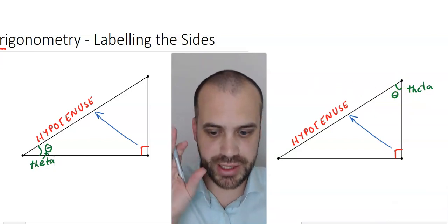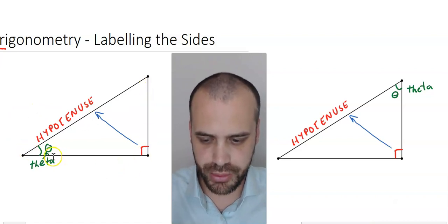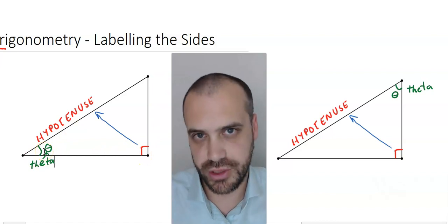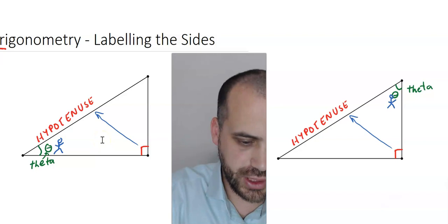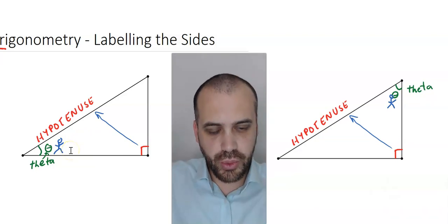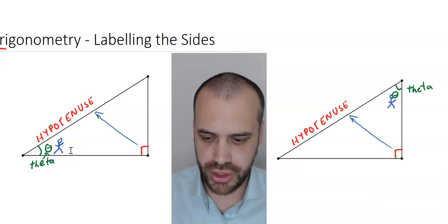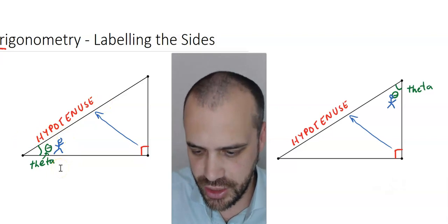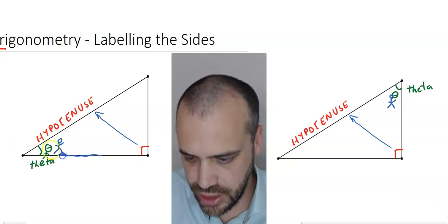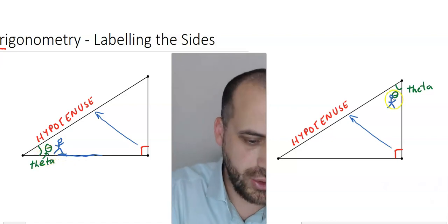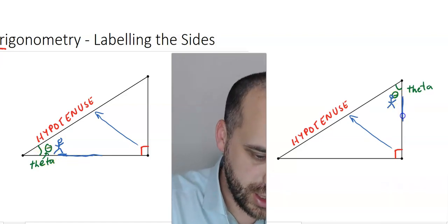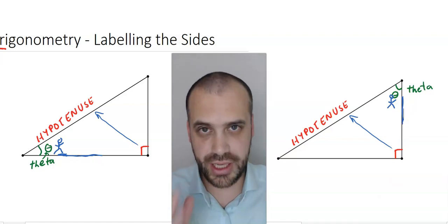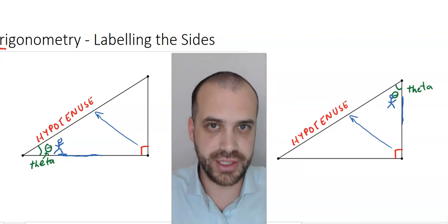I want you to imagine you are standing in a room. This is a top-down view of a triangular room, and you're going to stand at the angle of interest. Standing there, there are two walls you could touch: you could touch the hypotenuse and you could touch the other side. The side you can touch that isn't the hypotenuse is called the adjacent side.